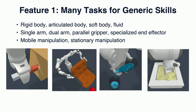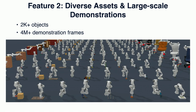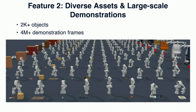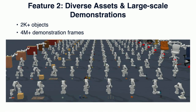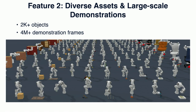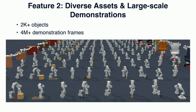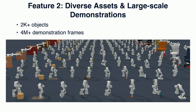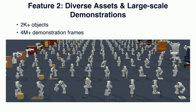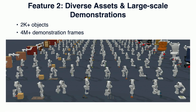Feature one is a lot of tasks for generic skills. We've included rigid body, articulated body, soft body, and fluid simulation. For robots, there are single-arm robots, dual-arm robots, parallel grippers, and specialized end-effectors — we're gradually growing it; this version doesn't have a five-finger gripper yet. It supports both mobile manipulation with a moving base and stationary manipulation. We have training and test object splits to evaluate generalizability. For each task, we've created diverse 3D assets derived from my previous work ShapeNet, plus new ones collected from the internet and soft-body assets from the Plastician Lab in collaboration with a group at MIT. We have over 2,000 objects and over 4 million demonstration frames.